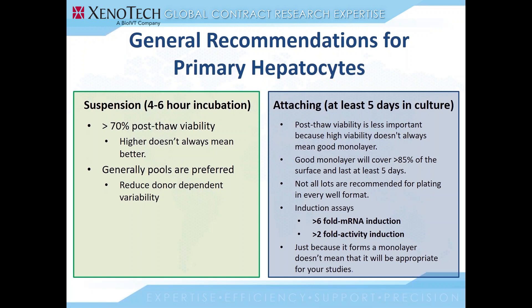When looking at attaching hepatocytes, you'll want to confirm that they will form a good monolayer and that it will last the duration of your planned experiment. Post-thaw viability is not as important for attaching hepatocytes because only viable cells will contribute to the formation of the monolayer. You'll also want to make sure the lot you're interested in has been validated in the well format you intend to use, as not all lots plate efficiently in all well formats. With regards to induction assays, look through the data sheets and pick lots that have mRNA fold induction of around six-fold or more, and at least two-fold induction in activity rates. Cells that induce lower can also be used, but cells inducing around six-fold will give you good sensitivity and you're less likely to miss induction.